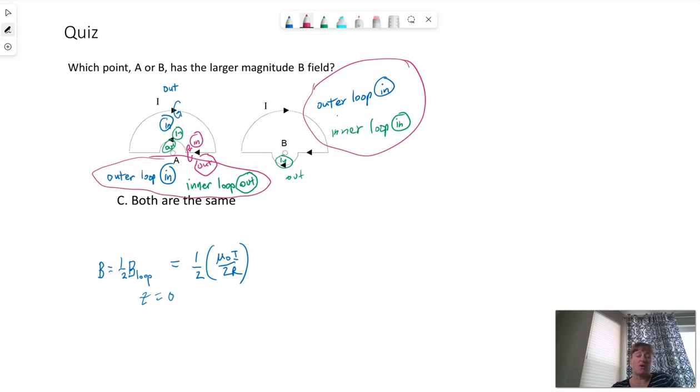So this is going back to addition of vectors in general. Vectors depend upon the coordinate system. So with part B, option B, or point B there, since both loops contribute to the magnetic field in the same direction, we get a larger magnetic field overall.